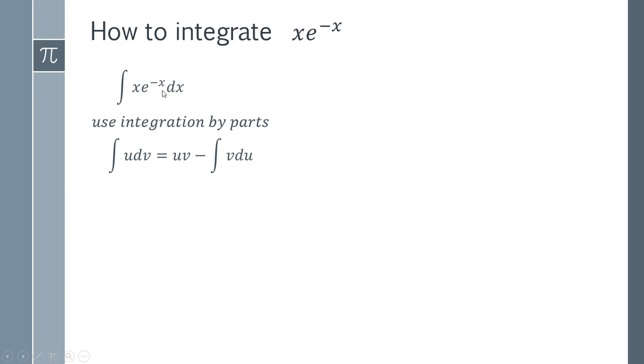If we were to choose u as e to the minus x it's just going to be a nightmare and this is never going to get any simpler. So what we're in fact going to do is take u equal x and dv is going to be e to the minus x, and we need to think about how we get the remaining parts of this formula.